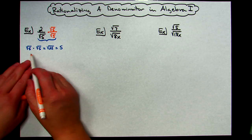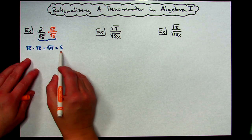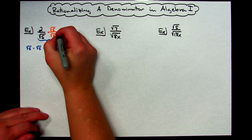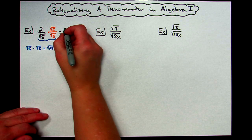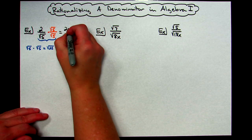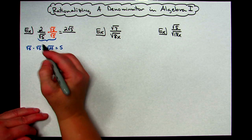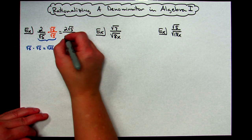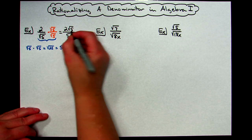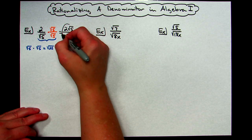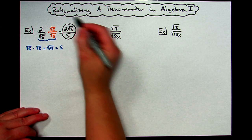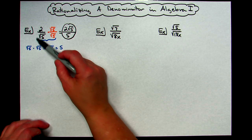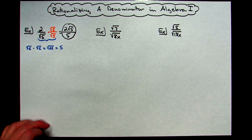You do not want to have to write this out every time. Simplifying here, multiplying across the top, I'm going to have 2 radical 5, and then on the bottom, radical 5 times radical 5 — the radicals go away, leaving just a 5. So we have now rationalized the denominator; in other words, gotten rid of that radical that is in the denominator.